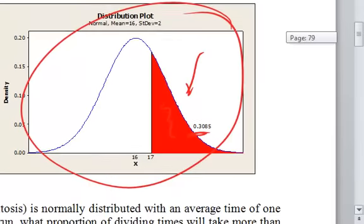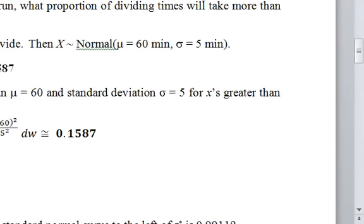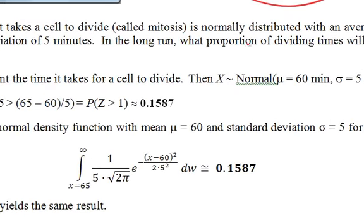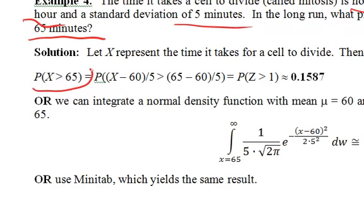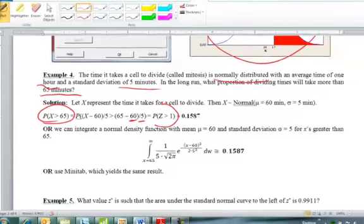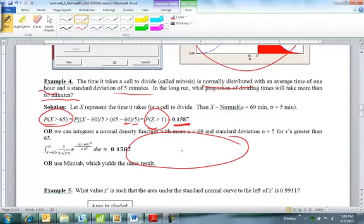I just did another problem down here. Same thing. Here's the time it takes a cell to divide. It is normally distributed with a mean of an hour, standard deviation of five minutes. What's the probability a dividing time will take more than 65 minutes? So there's my distribution. What I'm going to do is standardize, subtract mean, divide by standard deviation. That's a z-score. Look it up in the table, or I could integrate. There's your standard deviation, there's your mean, there's your standard deviation. I integrate. Or I could go to Minitab.